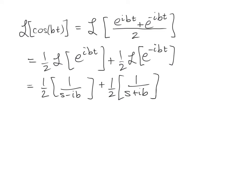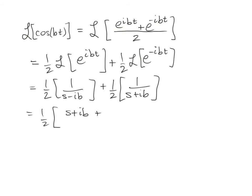All right. And now we can go ahead and actually add these two together with common denominators. So we get one half of the sum, multiplying the top and bottom by this. We get plus S plus IB. And then back here, multiplying top and bottom, S minus IB. And then over the product, S minus IB and S plus IB.